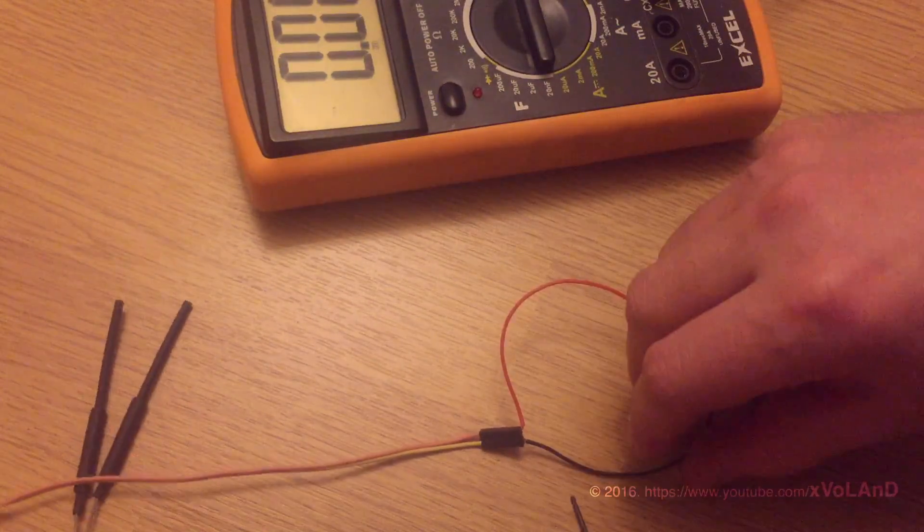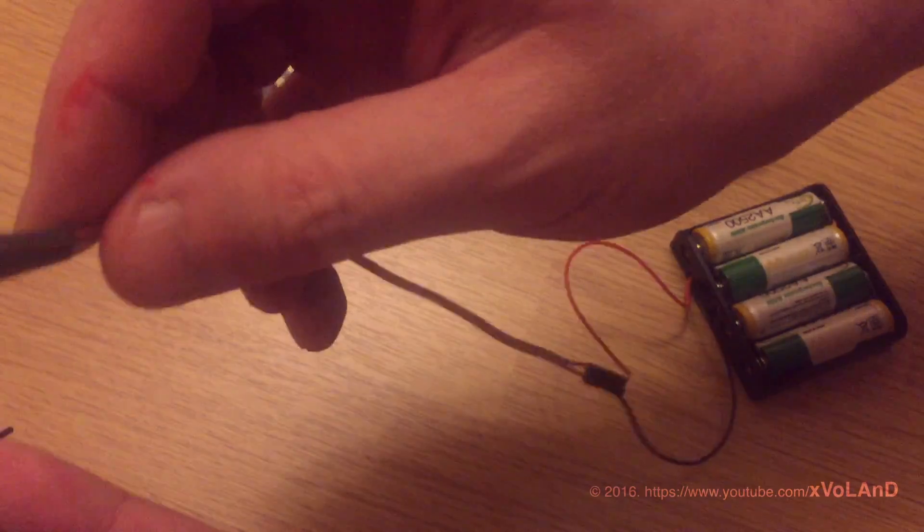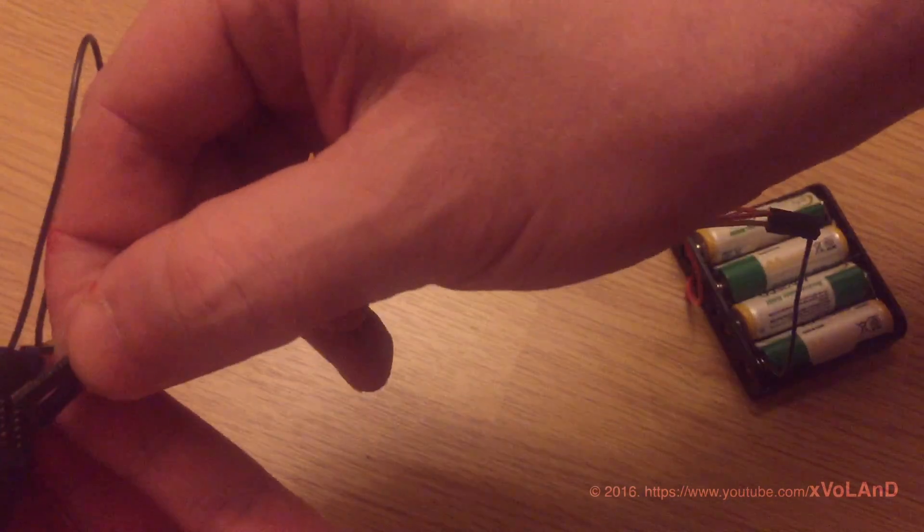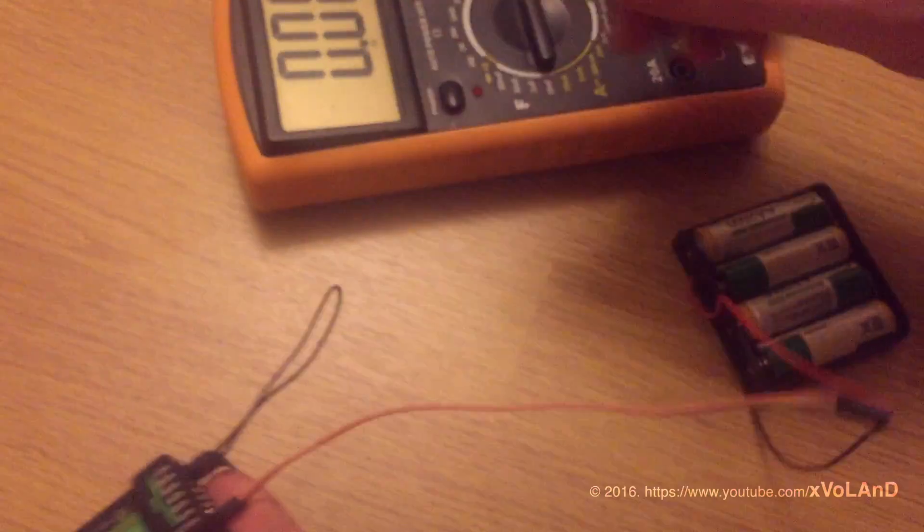And connect power to your receiver. Plus to plus pin, minus to minus pin. The LED on the receiver starts to blink.